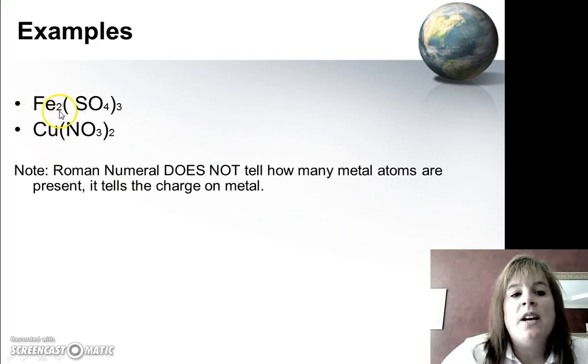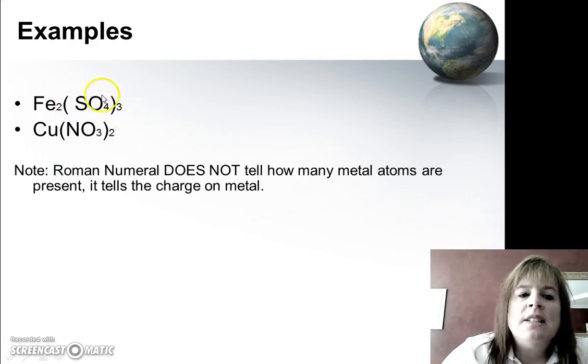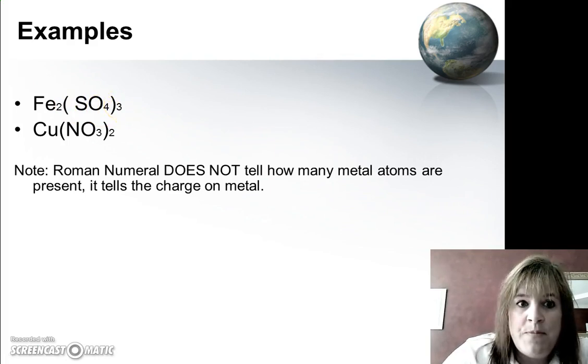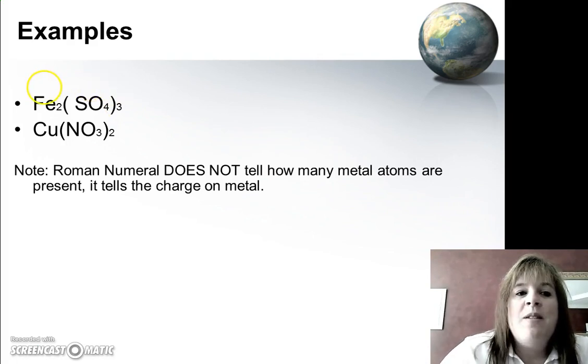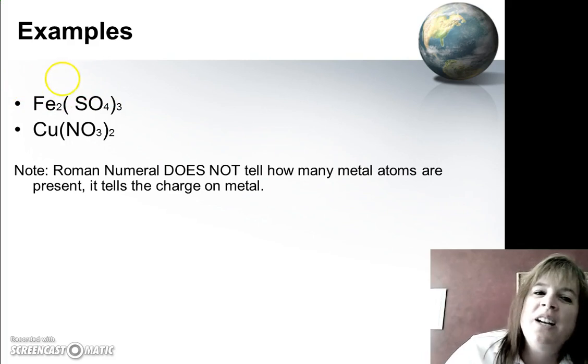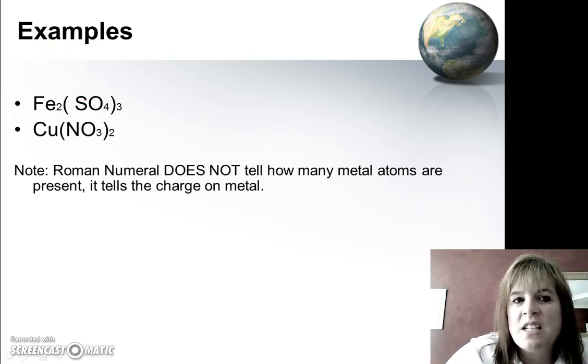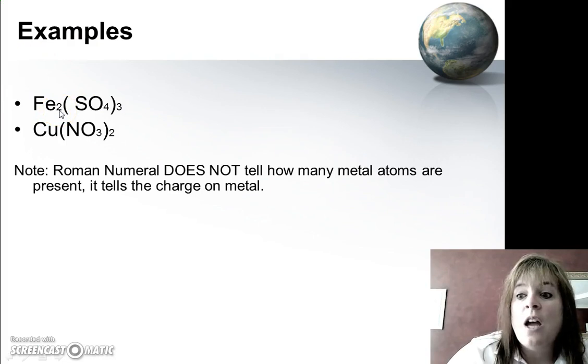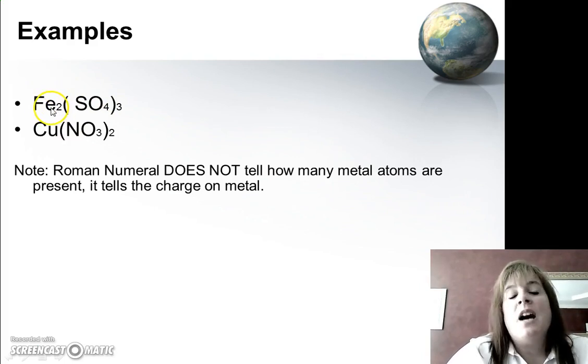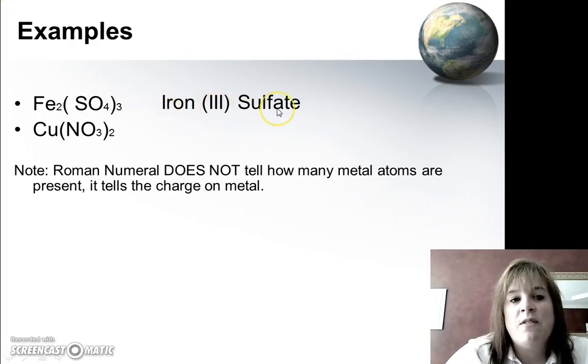So let's take a look at some examples. So here I have two irons with three sulfates. Well, let's see. I know sulfate is minus 2, and I have three of them. So that must mean, and I have two irons, so this would be like a minus 6. So if I divide that by 2, I get plus 3. Or could we do the crisscross? This would be a minus 2, that would be a plus 3. So this would be iron, Roman numeral 3, sulfate. So iron 3 sulfate.